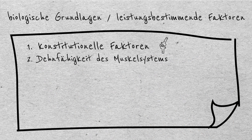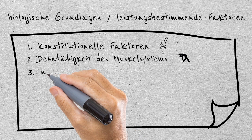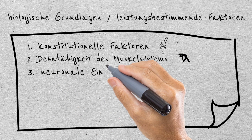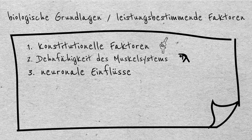2. Die Dehnfähigkeit des Muskelsystems bestimmt in großem Maße die Beweglichkeit. 3. Neuronale Einflüsse: Die Muskelkontraktion wird durch das Nervensystem gesteuert, dieses beeinflusst dadurch ebenso die Beweglichkeit.